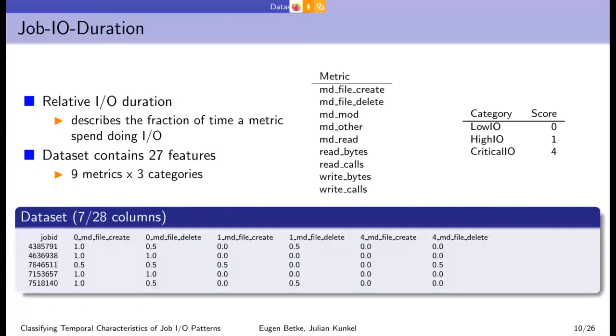So the next dataset is job I/O duration. It is an experimental dataset. It describes the fraction of runtime that the jobs spent doing a particular I/O. The visualization shows a fraction of the dataset. Columns beginning with zero describe how much time the job spent doing low I/O. Columns beginning with one describe how much time a job spent doing high I/O. And columns beginning with four describe how much a job spent doing critical I/O. The dataset contains 27 features, but I couldn't put them on the slide.